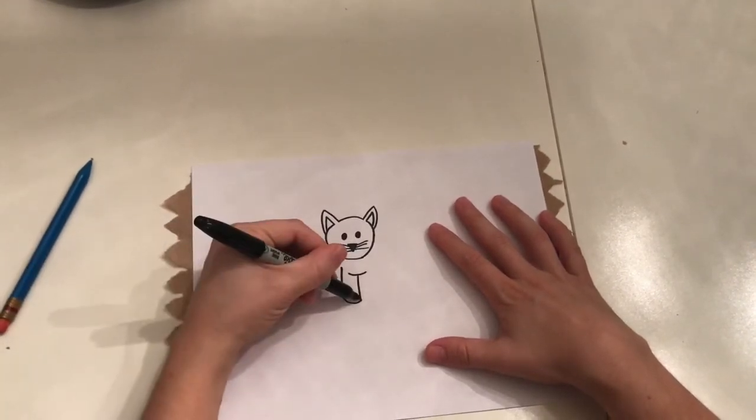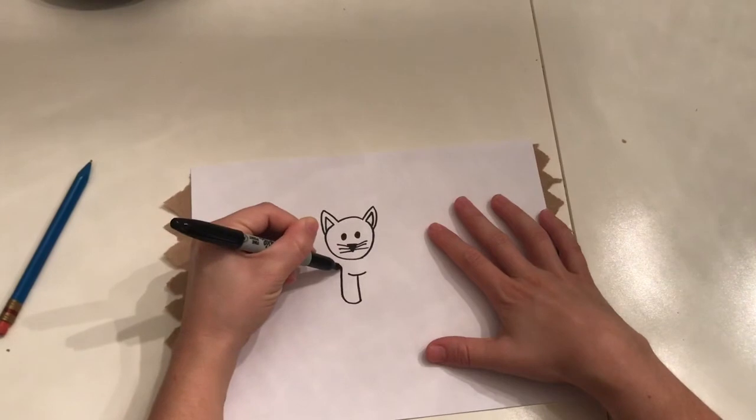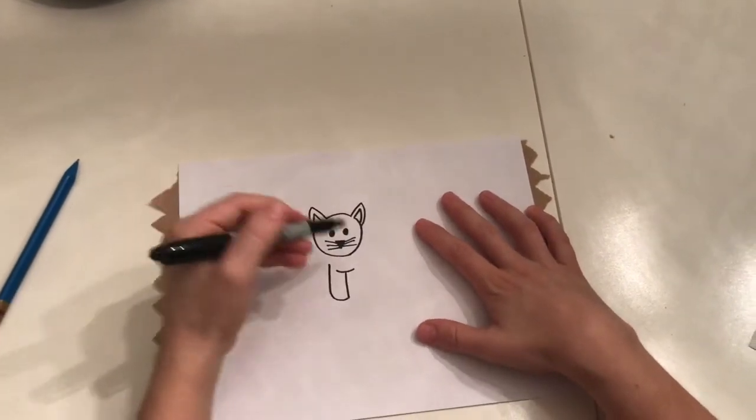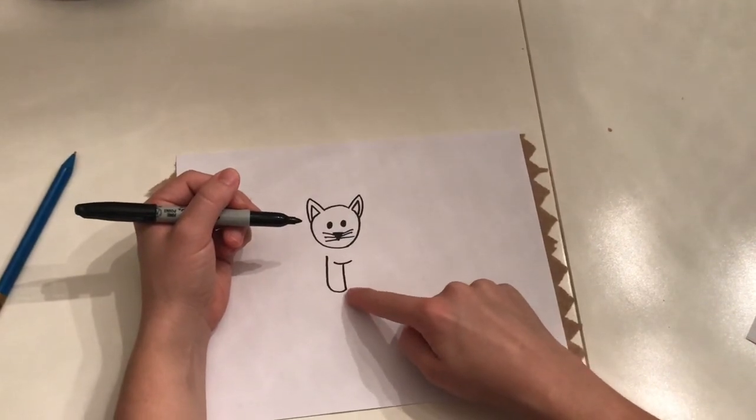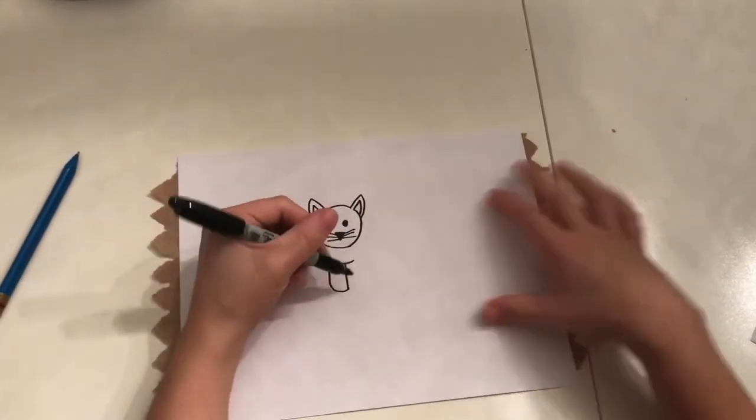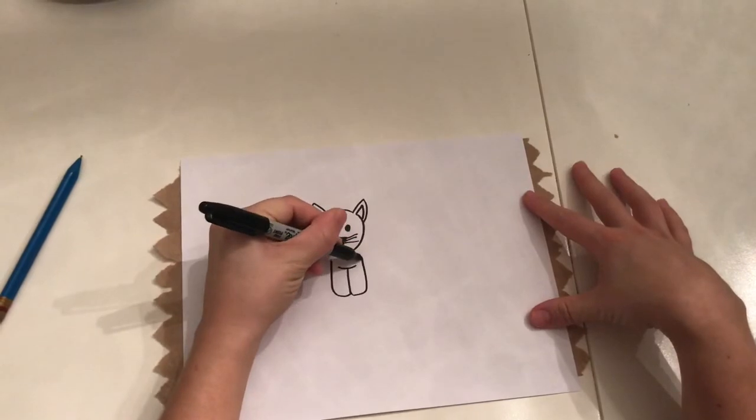So it curved up. And it's still floating. We're still not touching our head. Then the same on this other side. We're going to curve it. Start it at that little. At the bottom of our T. And curve it up. Okay.